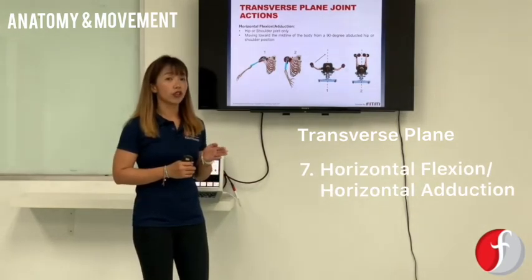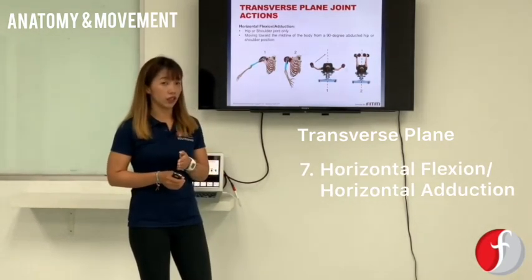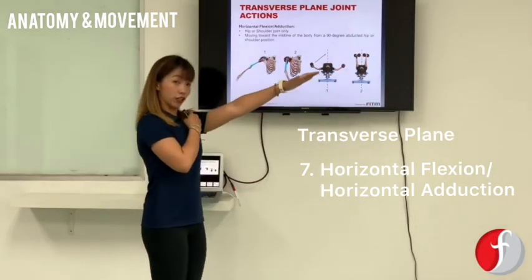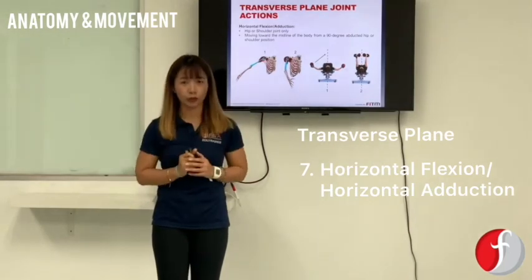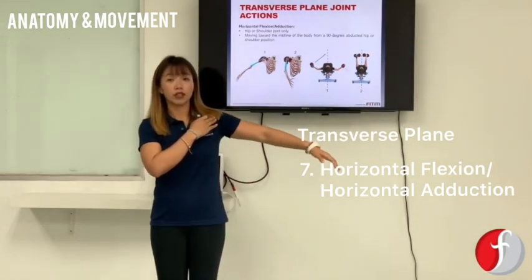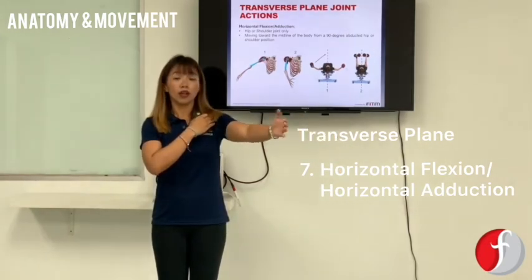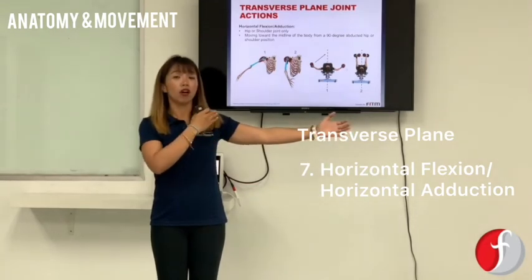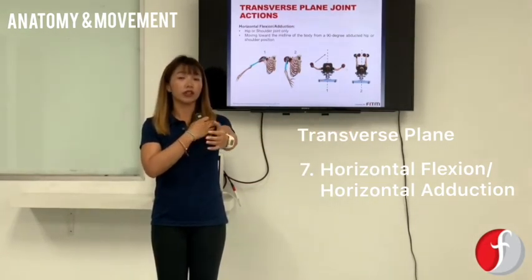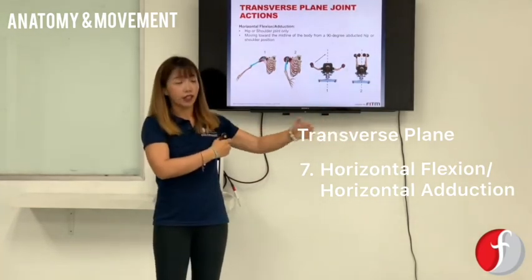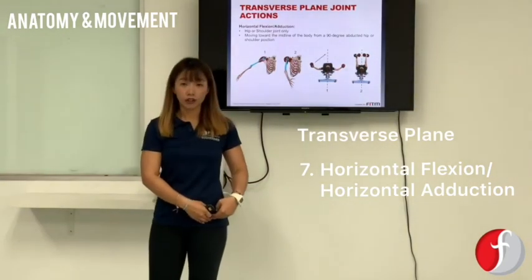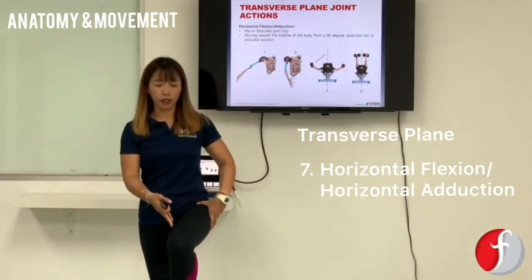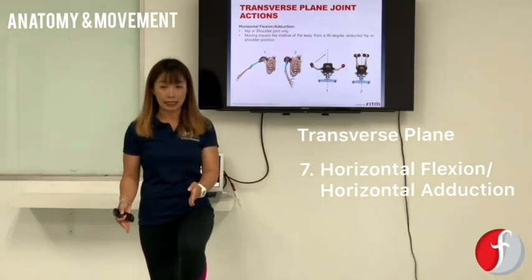The last movements are horizontal flexion — also called horizontal adduction — and horizontal extension, also called horizontal abduction. For this movement, look at your shoulder joint. Lift your arm to about 90 degrees, and moving it across the body is horizontal flexion or horizontal adduction, while moving it back is horizontal extension or horizontal abduction. For the hips, you can also perform horizontal flexion and horizontal adduction by flexing the hip to 90 degrees and then moving it across or away.